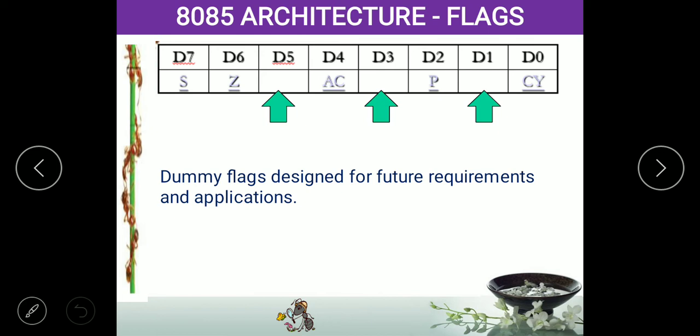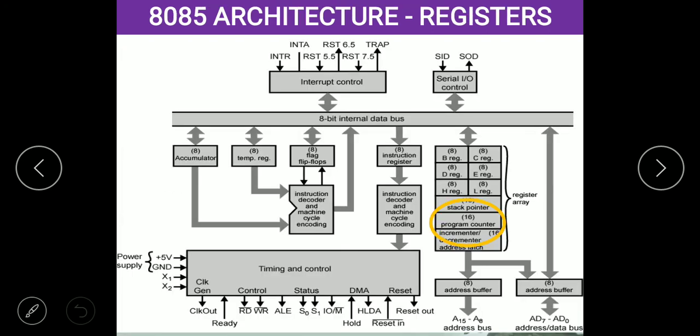The carry flag, auxiliary carry, and parity flag will not be disturbed by software — the processor does not allow disturbance to those flags. However, some other software may use the dummy flags for their own purposes to know a status. Now we have completed discussing the B register, C register, and the flags.